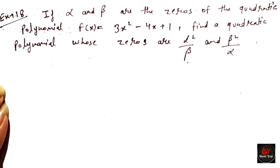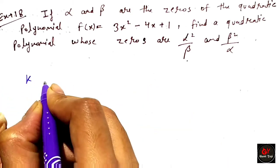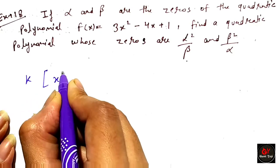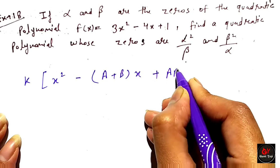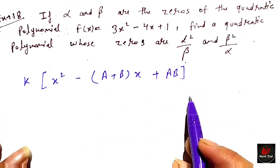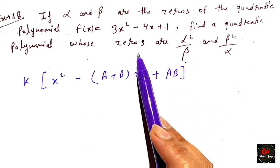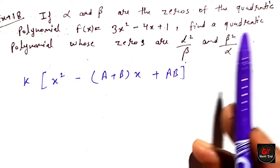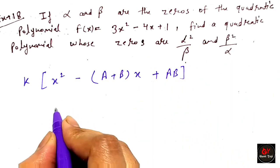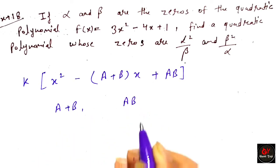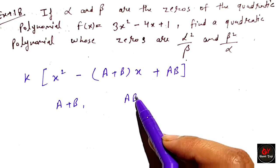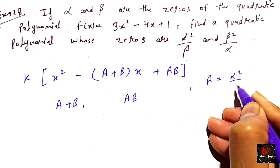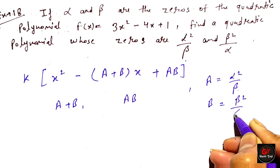We have to solve this problem. We need to find the sum of zeros (a + v) and the product (ab). Alpha and beta are the given zeros, so we first find alpha plus beta and alpha times beta. Here a equals alpha squared over beta and v equals beta squared over alpha.